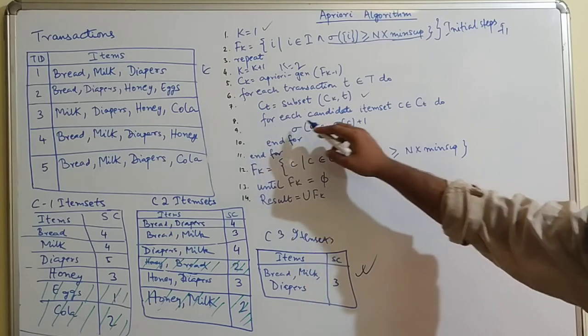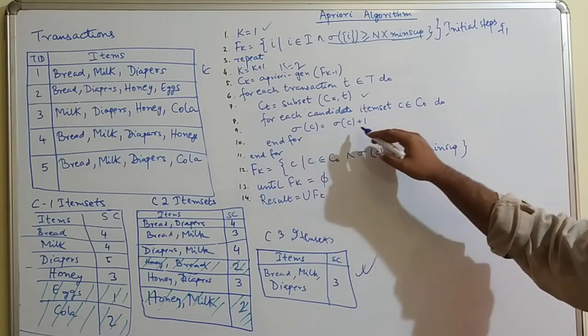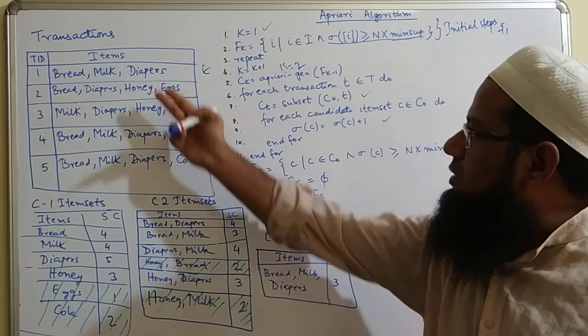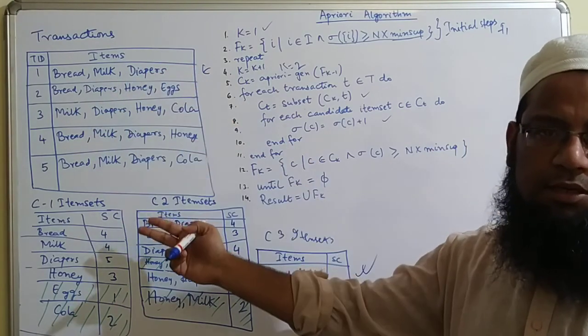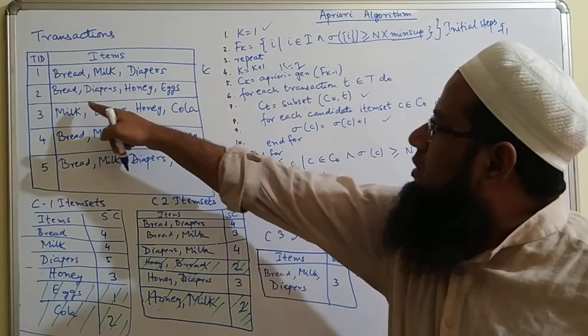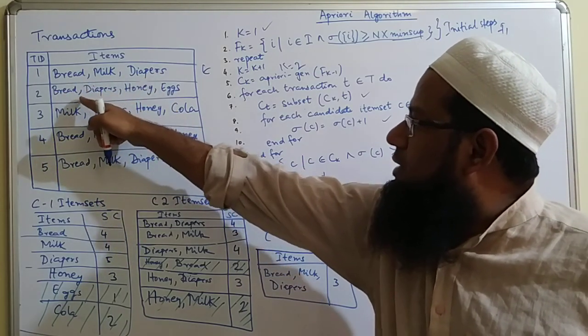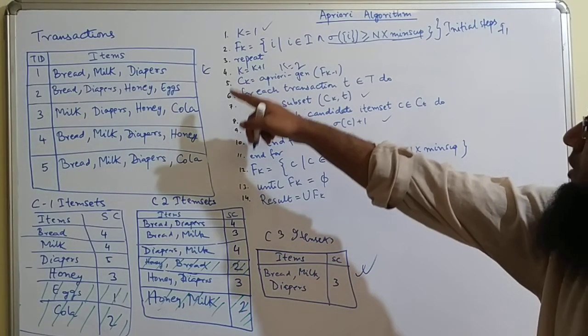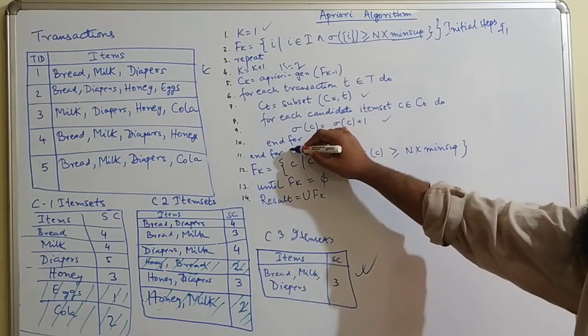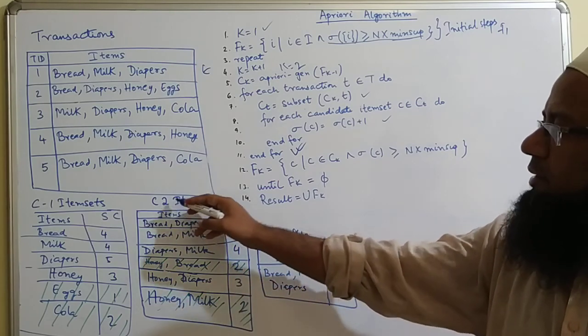Next, for each candidate set c belongs to c of t, support of c equals support of c plus 1. So wherever you get bread and diaper in the transaction database, you increment by 1. For example, bread and diaper you got here, that is 1, then again in the next transaction you got it, so that becomes 2, until you complete all the transactions.